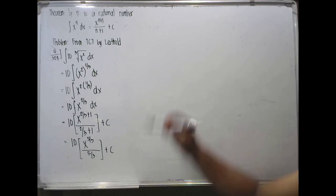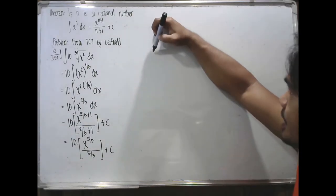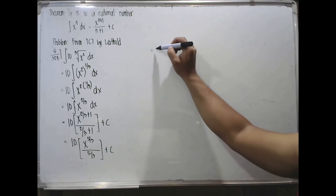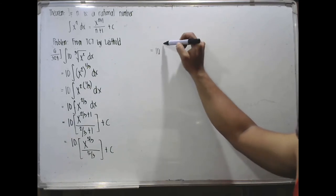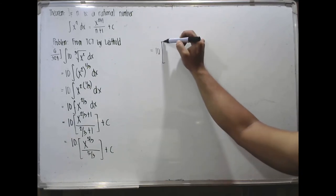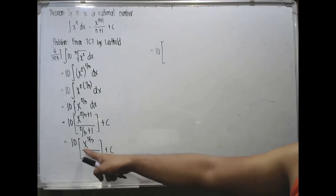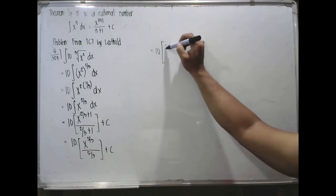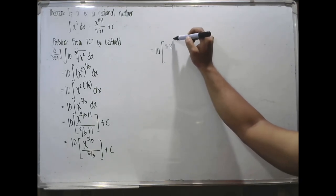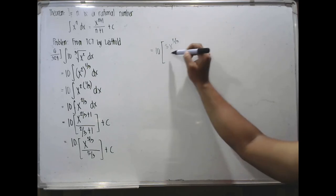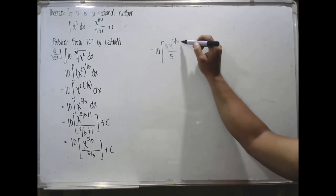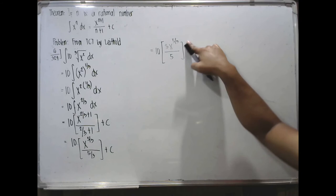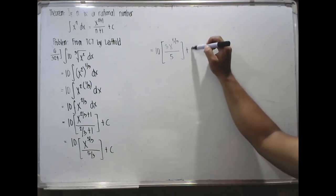So apply now the algebraic operation, so you have 10 times x raised to 5 thirds. So you have 10 times x raised to 5 thirds divided by 5 thirds, so that would be 3x raised to 5 thirds over 5 plus c.